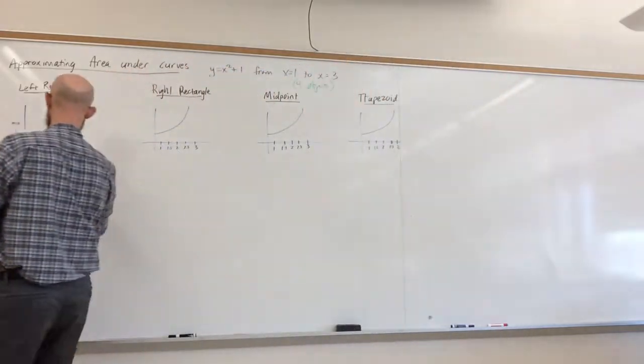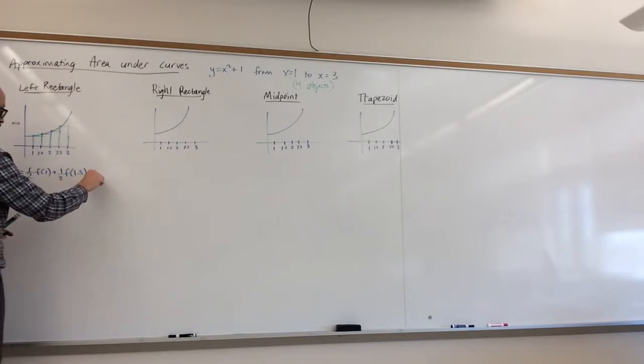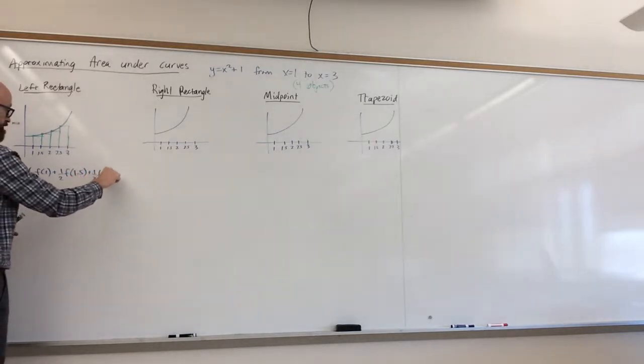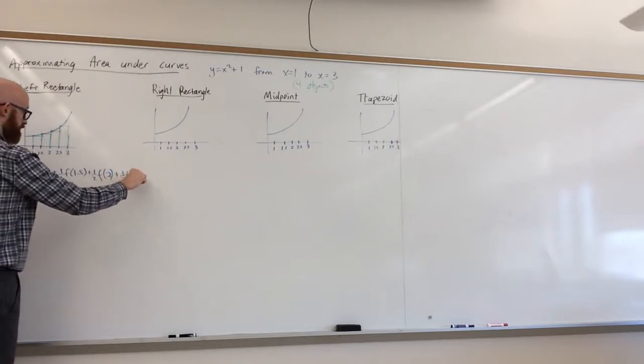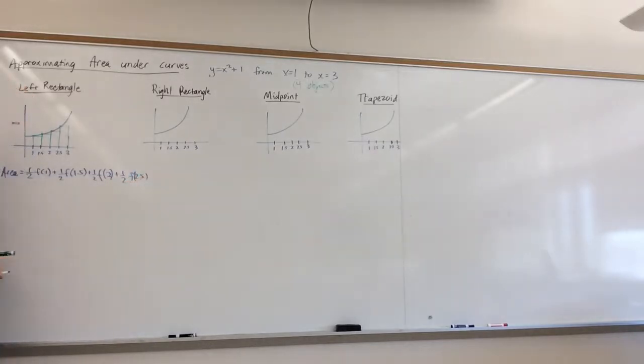So each rectangle, the area is base times height. Each base is one half, and the height of the first one is f of 1. And then the next one is a half times f of 1.5 and a half times f of 2 and a half times f of 2.5. And if you add all that up, it's going to give us the area of all the green stuff.